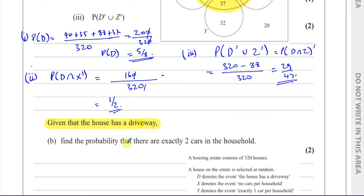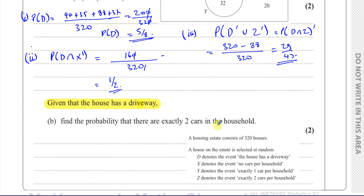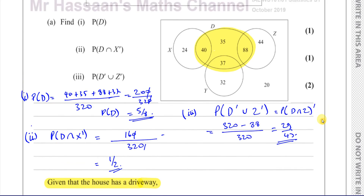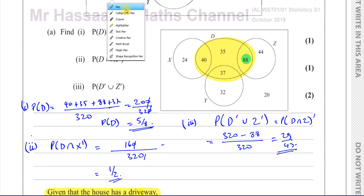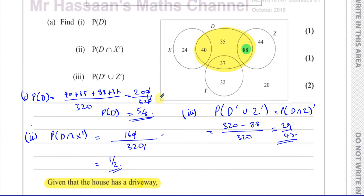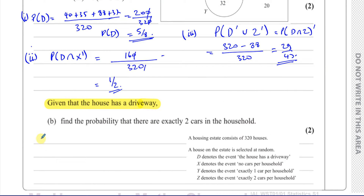So given that the house has a driveway, find the probability that there are exactly two cars in the household. The set that stands for two cars is Z. So we look inside circle D for what belongs to circle Z, and we can see it's those values. It's 88 out of the total of D, which is 200. So it's 88 over 200 — the probability of Z given D.